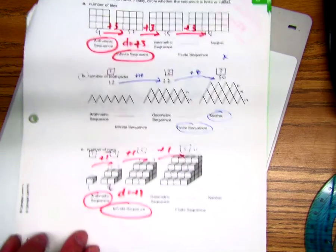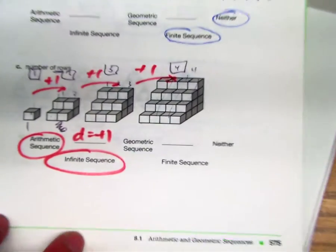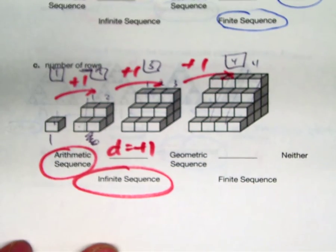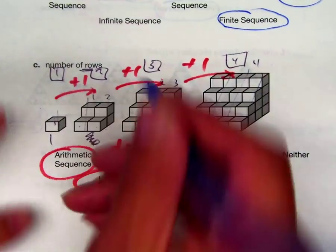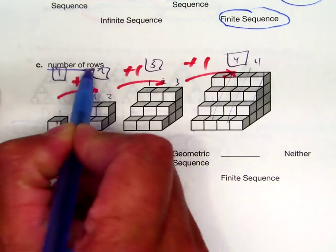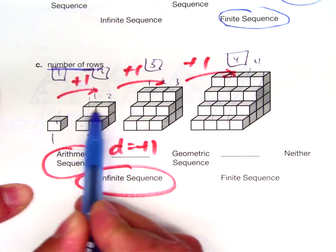So in this problem, if I look at the pictures, I also want to be paying attention very carefully to what they're asking me. They're asking for number of rows, not the number of cubes.